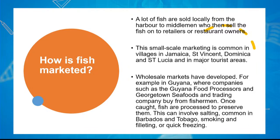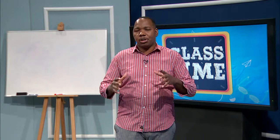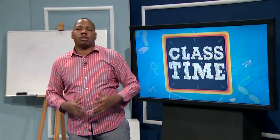A lot of fish is sold locally. Some is sold to middlemen who take it to retailers like supermarkets and restaurants. Some fish is sold directly at local fishing villages — you can go to Old Harbour Bay or Raytown in Kingston and buy fish at the seaside. There are also wholesale markets and large corporations that distribute the fish supply, such as the Guyana Food Processing Organization, Guyana Food Processors, and Georgetown Seafoods in Guyana.